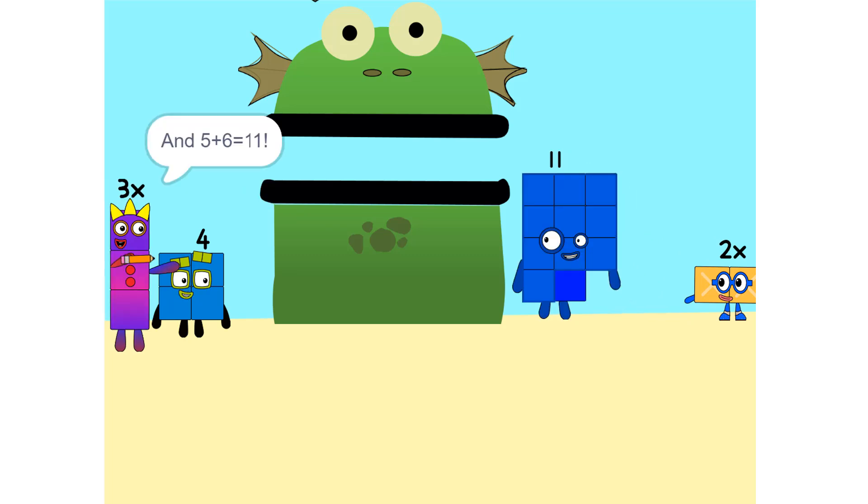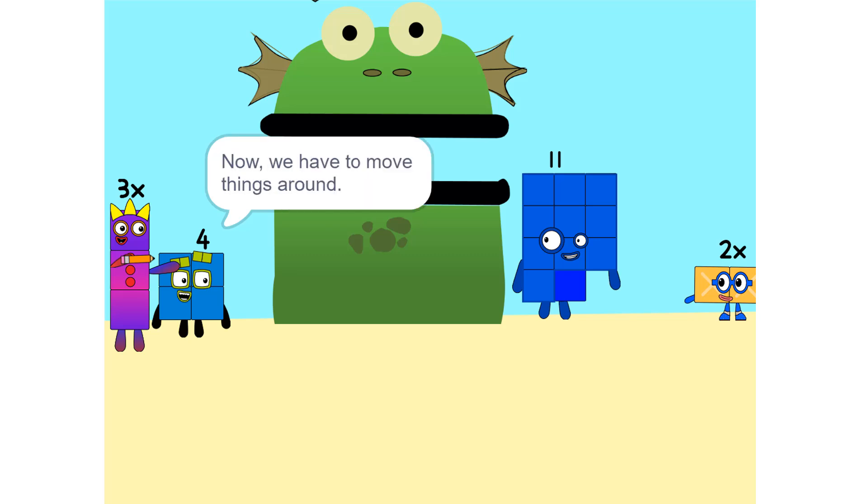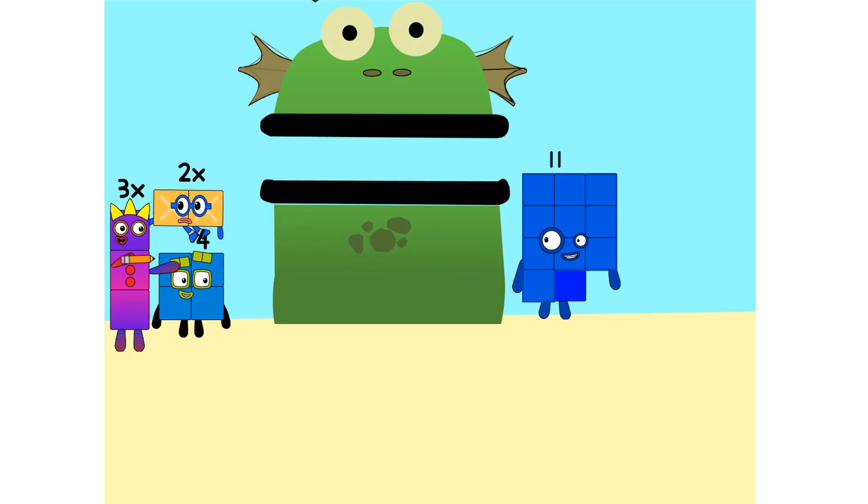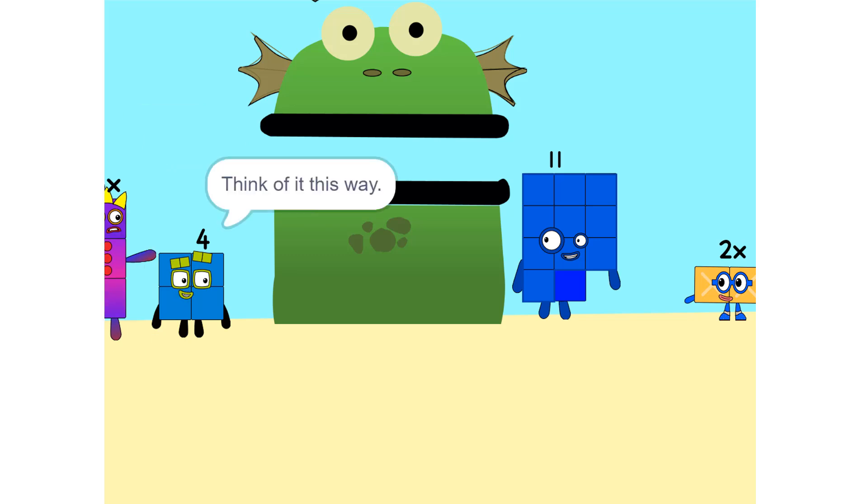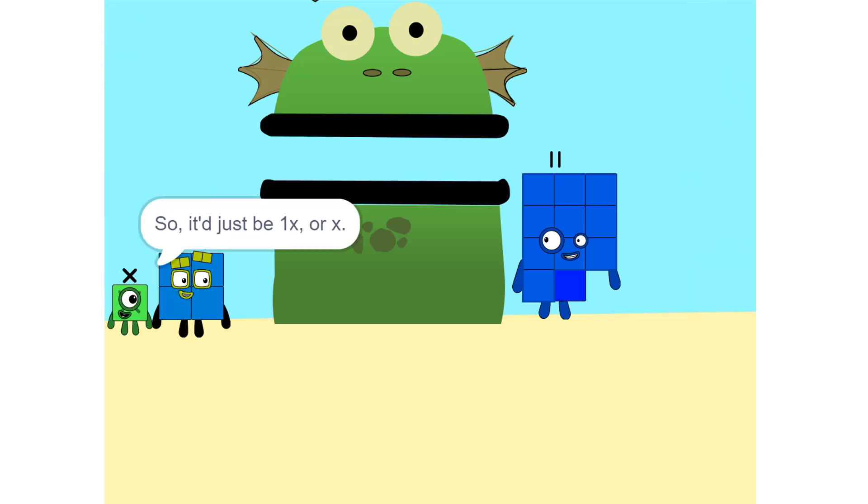And 5 plus 6 is 11. Yeah. Now we have to move things around. We have to move this 2X to this side. Whenever you switch sides, you have to switch its sign. So if it's positive, it becomes negative and vice versa. Why? Think of it this way. You're subtracting 2X from each side. Oh. So it'd just be 1X, or X. Correct.